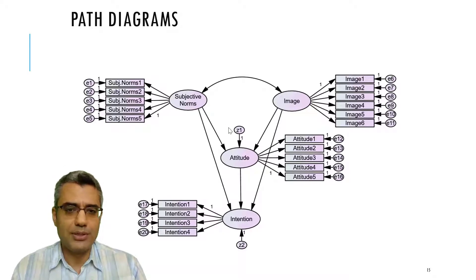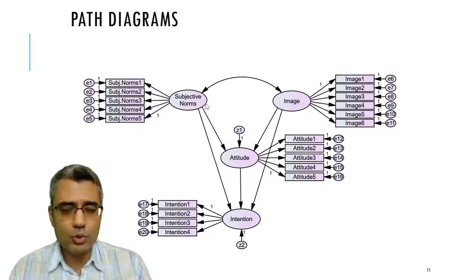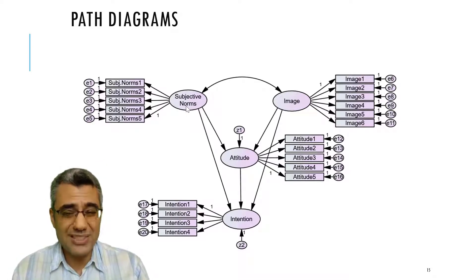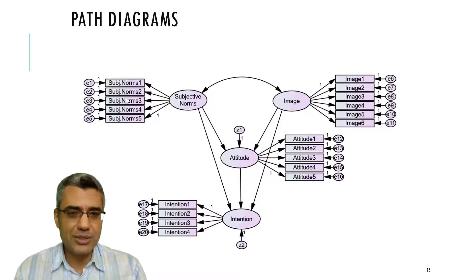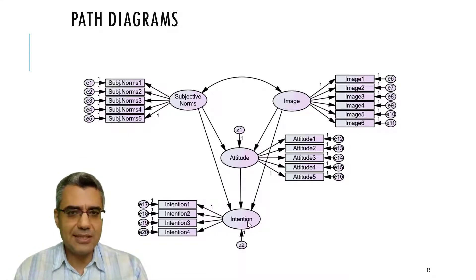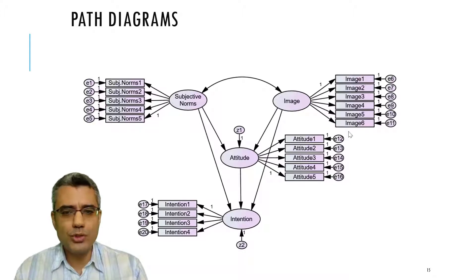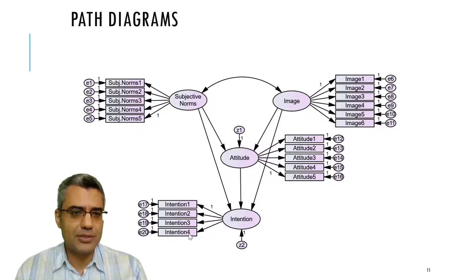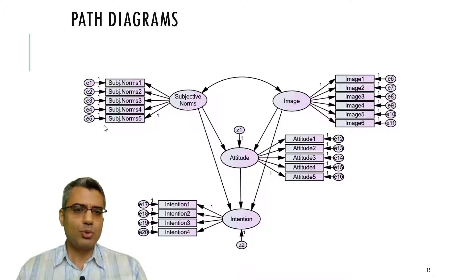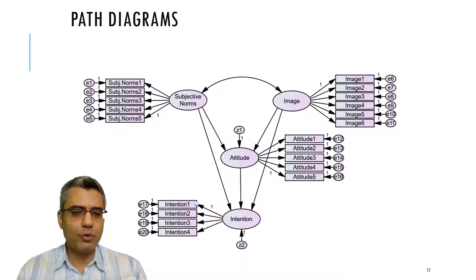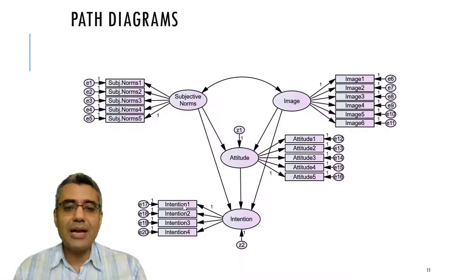For example, here you have four constructs. Constructs or latent variables are shown using oval or circle shapes, and you use boxes to show observed variables. In this model I have four constructs: subjective norms, image, attitude, and intention. Subjective norms is measured with five questions, image with six, attitude with five, and intention with four. This part showing the items and the construct is called the measurement model — for example, the measurement model for subjective norms, image, attitude, and intention are each shown here.